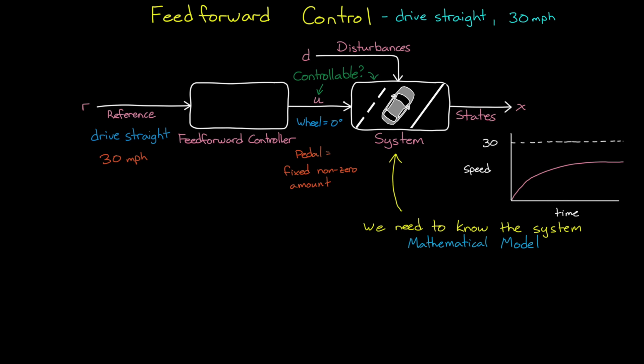Now, developing a model can be done using physics and first principles, where the mathematical equations are written out based on your understanding of the system dynamics. Or it can be done by using data, and fitting a model to that data with a process called system identification. Both of these modeling techniques are important concepts to understand, because, as we'll get into, models are required for almost all aspects of control theory.